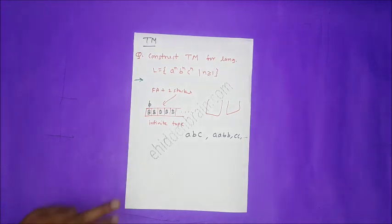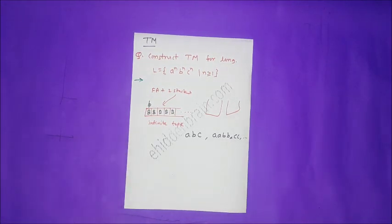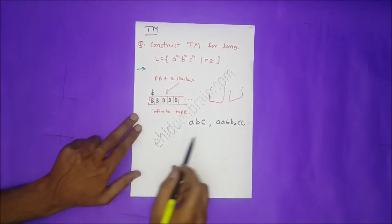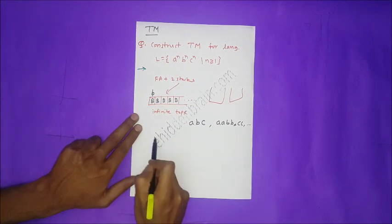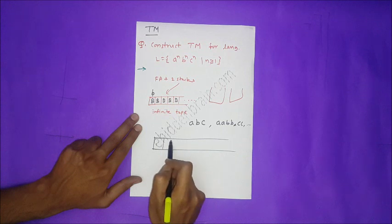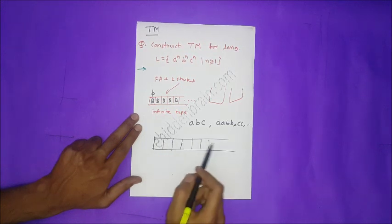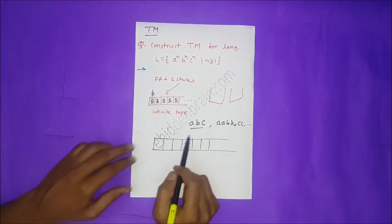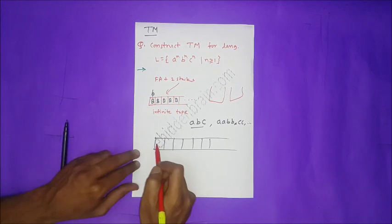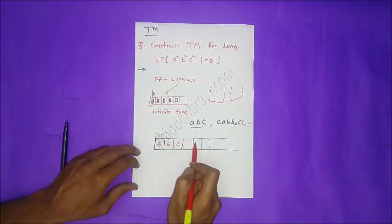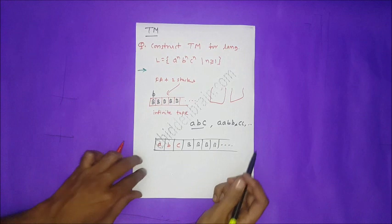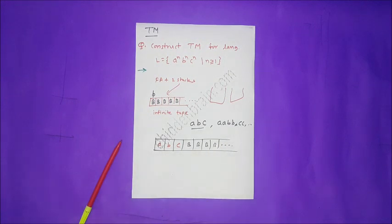Now let's see how to use this tape intelligently to accept this language. Whatever string is given, we place it directly onto the tape. So the string A, B, C is placed on the tape from left to right, with the remaining cells being blank symbols. This is the conventional method.